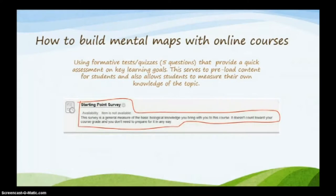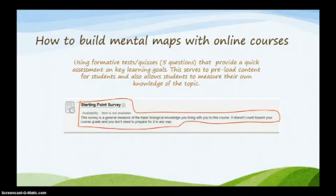Use forms to pre-test or quiz students — as simple as five questions providing a quick assessment on key learning goals. This serves to preload content and allows students to measure their own knowledge of the topic. For example, a starting point survey gives students a pre-assessment on basic biological knowledge, lets them know where they stand, and allows them to preload content into their mental map so they can refer back to it when the actual content is presented.